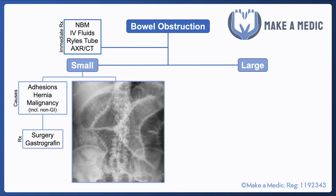Small bowel obstruction may be managed with surgery. However, given that adhesions are often the cause, it seems counterintuitive to operate since another operation increases the risk of further adhesions forming. Surgery is sometimes considered, especially if bowel wall necrosis is suspected. However, gastrografin may be a better option in many cases — it is an oral contrast medium that also acts like an osmotic laxative, drawing fluid into the lumen, reducing bowel wall edema, and helping relieve the obstruction.